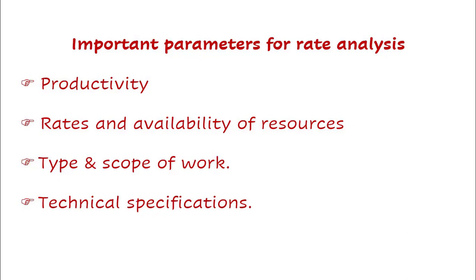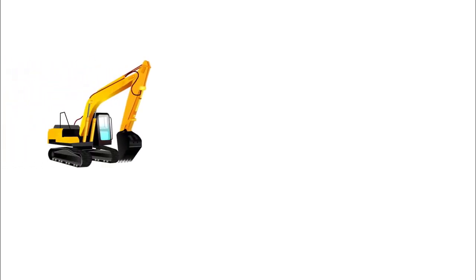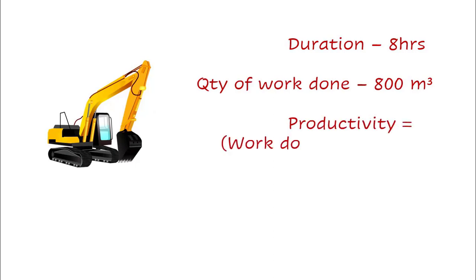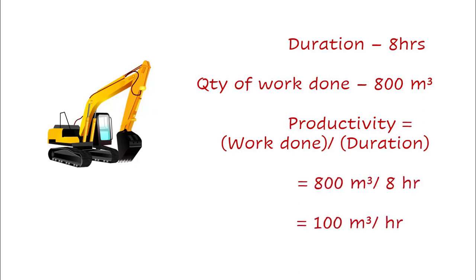The first parameter is productivity — the rate of output per unit of labor or equipment engaged for a particular work. For example, consider an excavator that excavates 800 cubic meters in 8 hours a day. Then productivity equals work done divided by duration: 800 divided by 8 equals 100 cubic meters per hour.